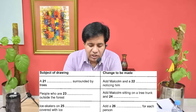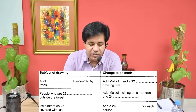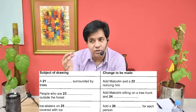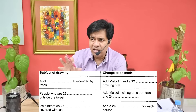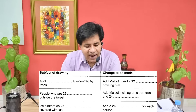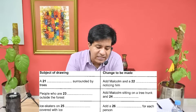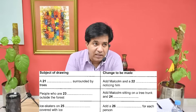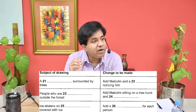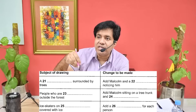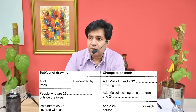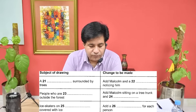Just one word. The table has two columns: subject of drawing and change to be made. Imagine there is a drawing someone has made, and someone is going to tell the changes. The clue says 'a dash surrounded by trees' — underline the word 'surrounded.' They might use the word 'covered with.' So whatever is surrounded by trees, whatever has trees on all sides, will be your answer.